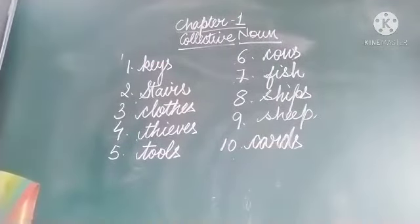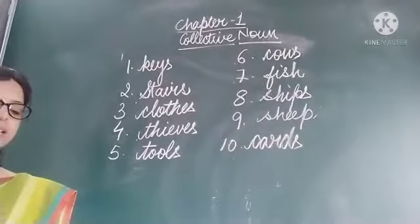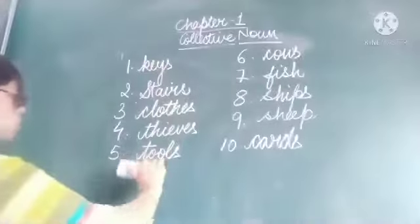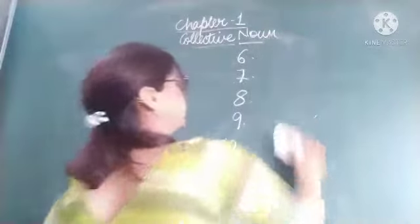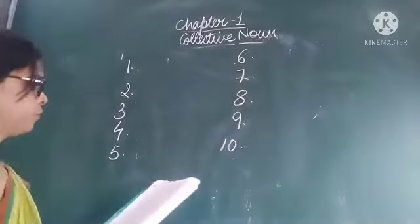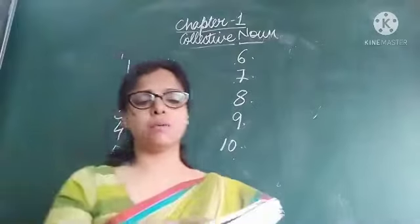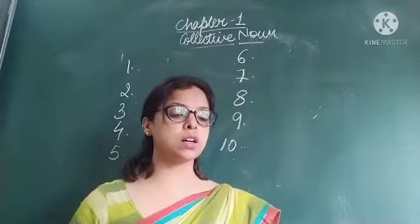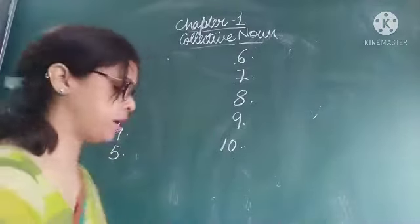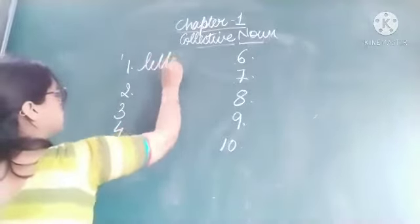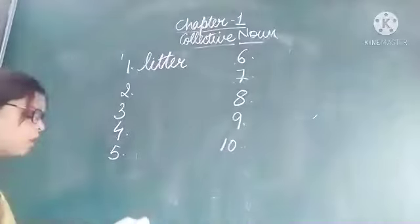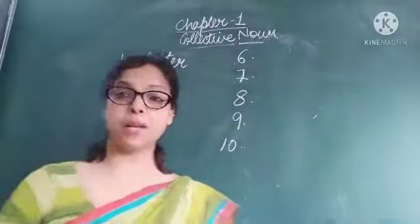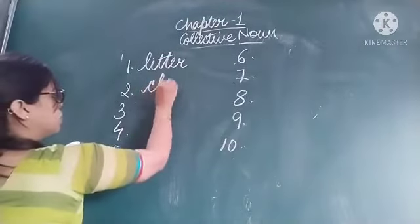Now page number 10, exercise C — fill in the blanks with suitable collective nouns from the given list. First: Dalyan chose the smallest puppy of the litter as his pet. Second: all the furniture the room had was a bed and a chest of drawers.